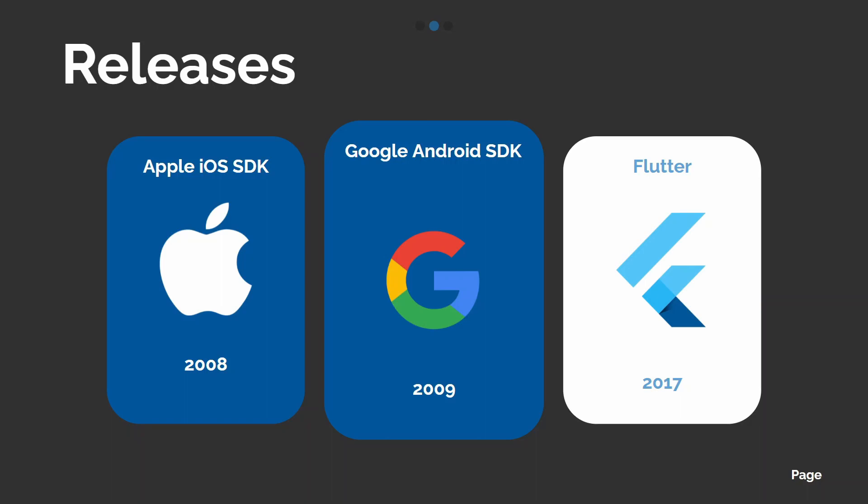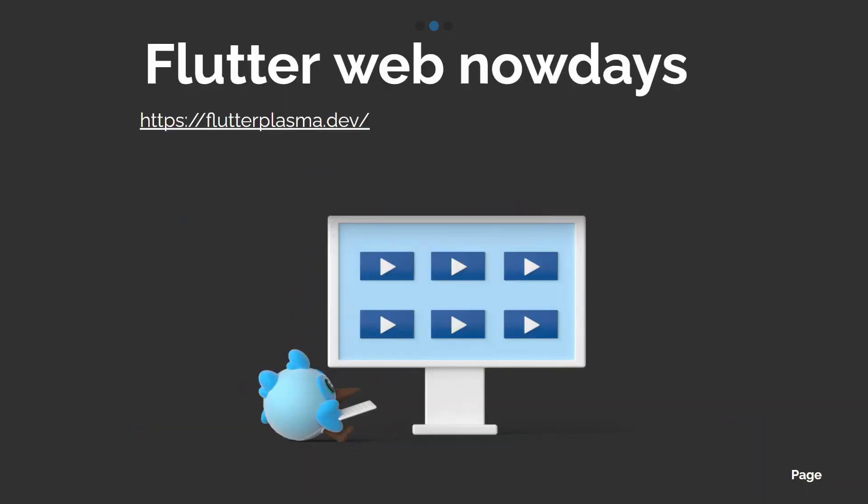After a while, there was Flutter, which made it all easier. You can write one code and it's compiled to machine code, so that's why it's so fast. You save things and it magically appears updated on your screen. You write code in Dart language and it compiles to machine code — that's why it's so much faster. And now we have Flutter web.